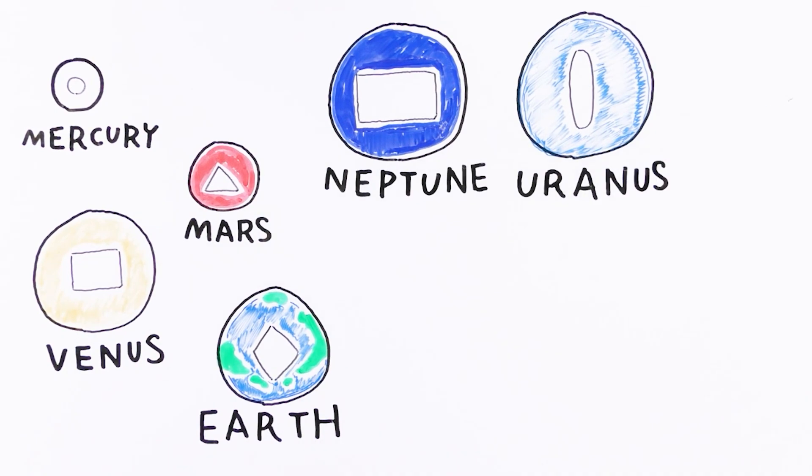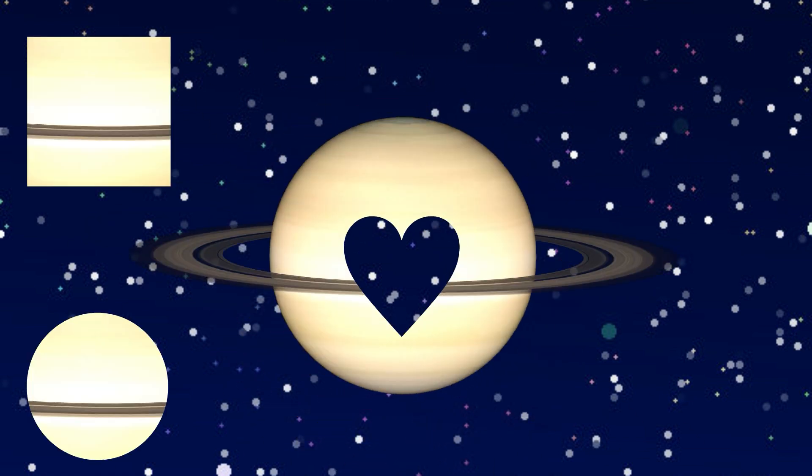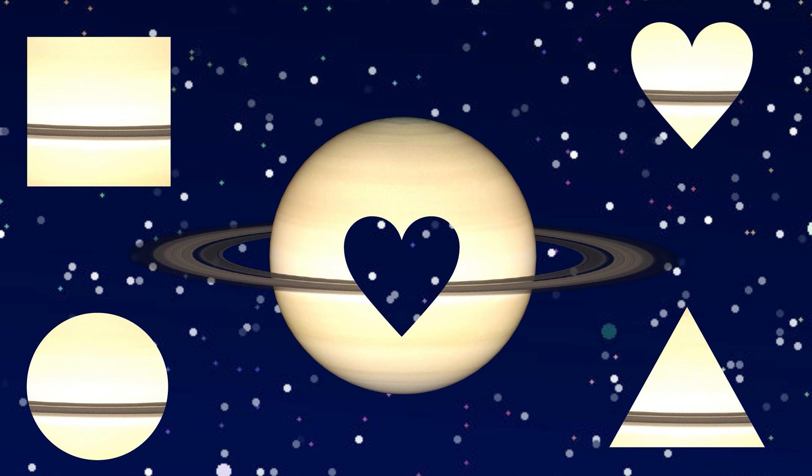Uranus. Square. Square, Circle, Heart, Triangle. What is this?